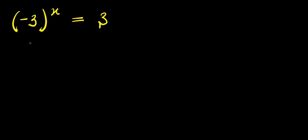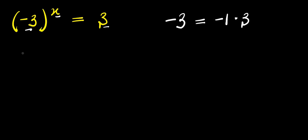Hello. How to solve this exponential problem: negative 3 to the power x equals 3. We are solving for the value of x that satisfies this equation. Let's start with the first method. I can rewrite negative 3 as negative 1 times 3, so this will be negative 1 times 3 raised to the power of x, and this equals 3.